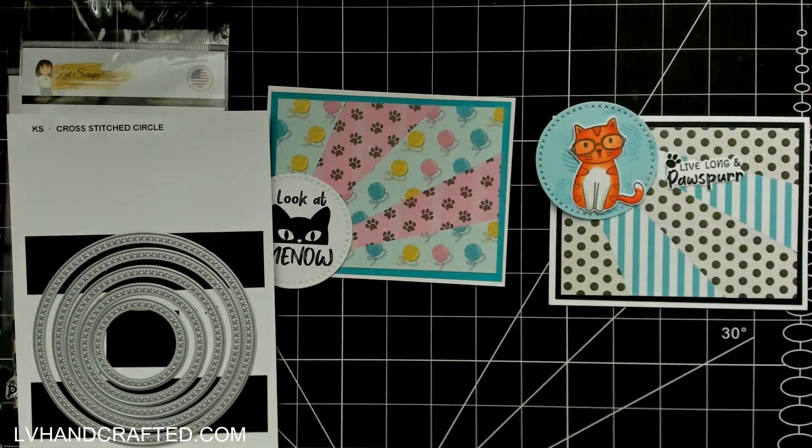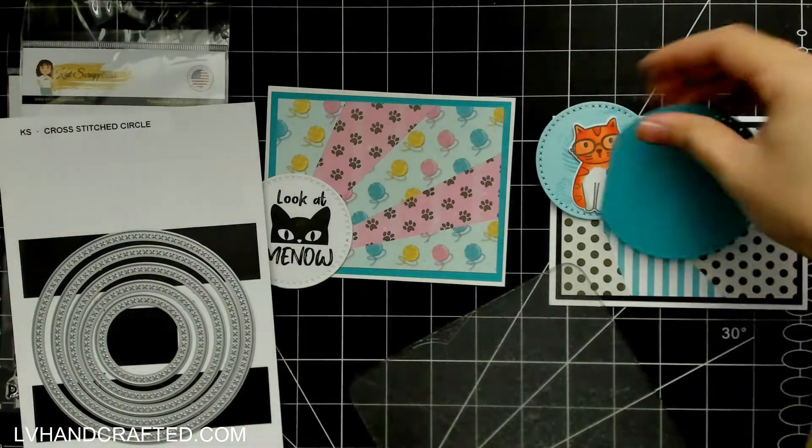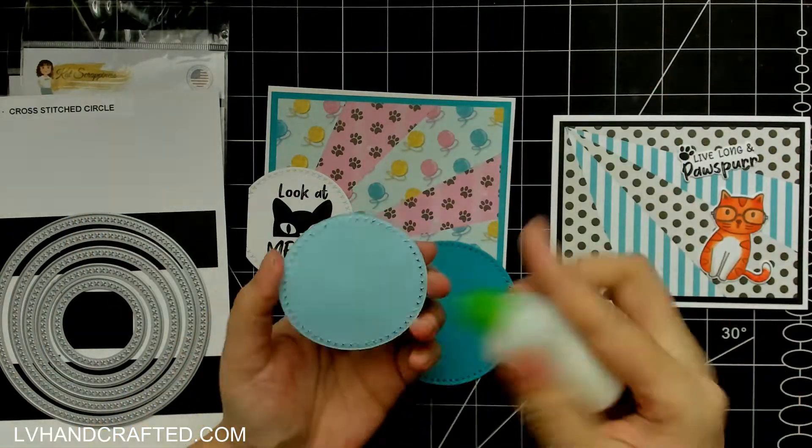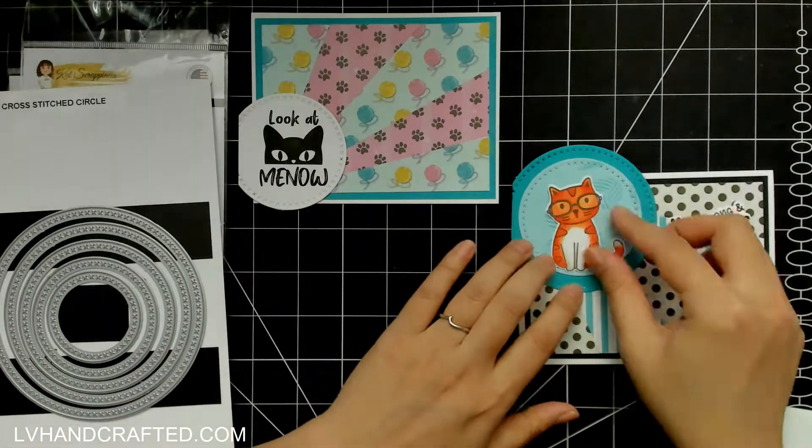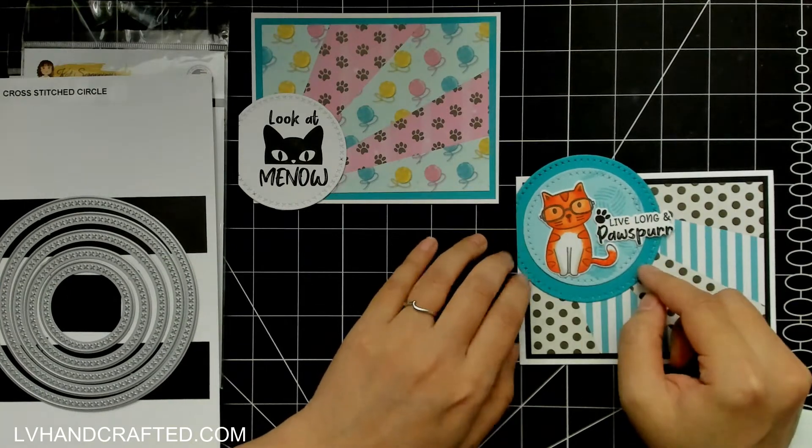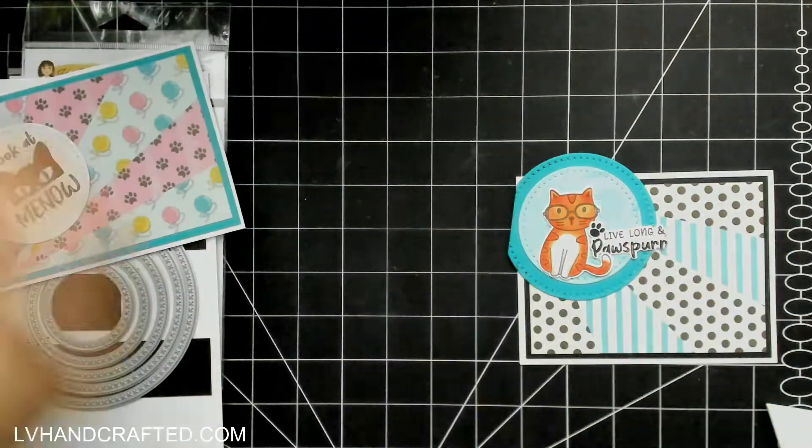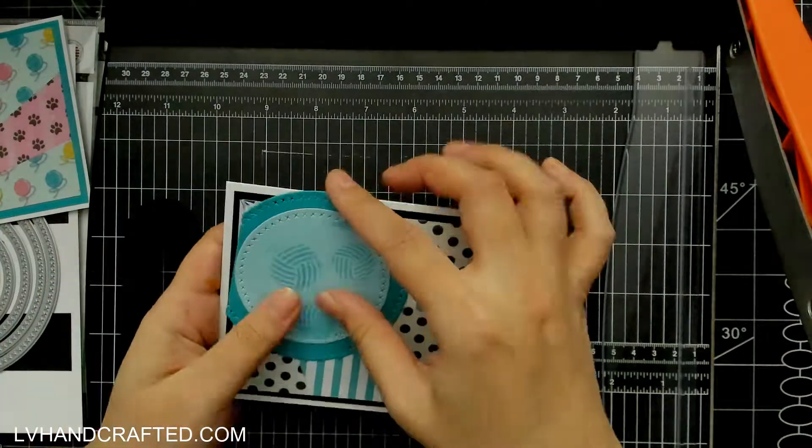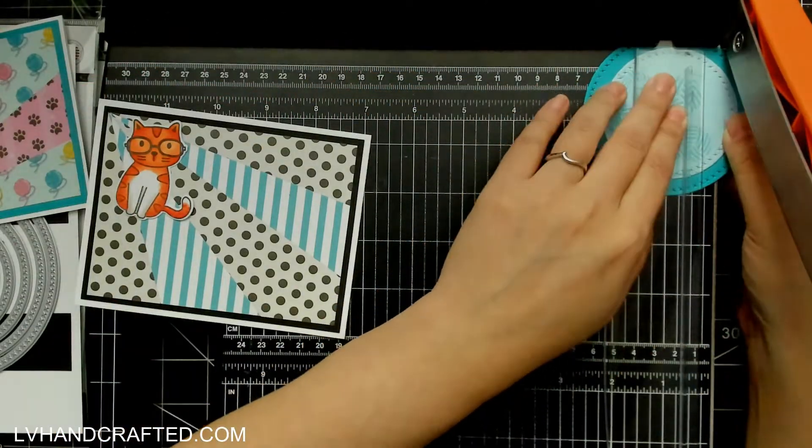Now I'm gonna use some sentiments from the Possum Cats sentiment stamp set, and my favorite one has to be Live Long and Prosper, because it just speaks to the sci-fi geek in me. That's why I wear glasses too, so that's why this cat really spoke to me and the sentiment seemed to match up perfectly with him as well.